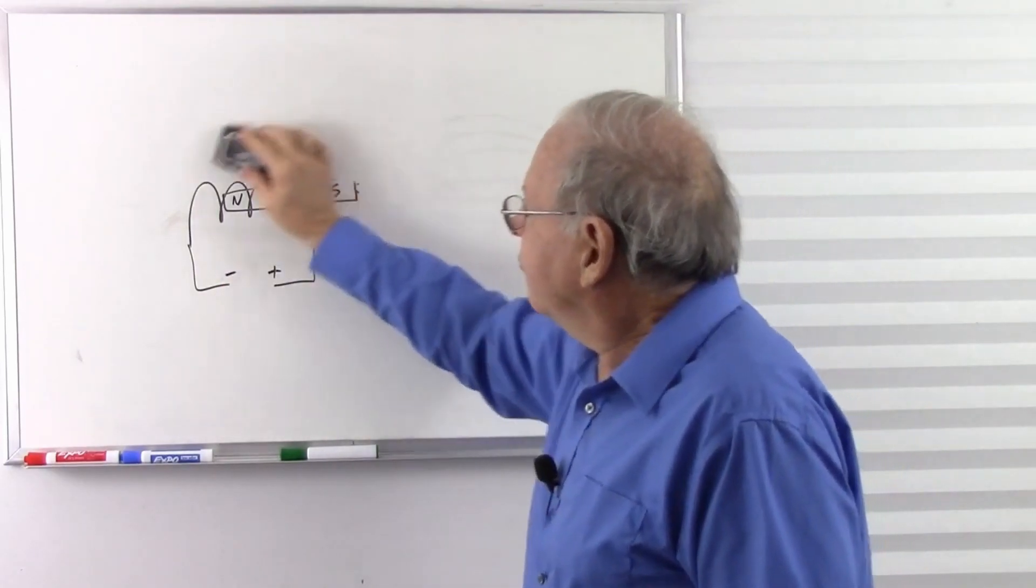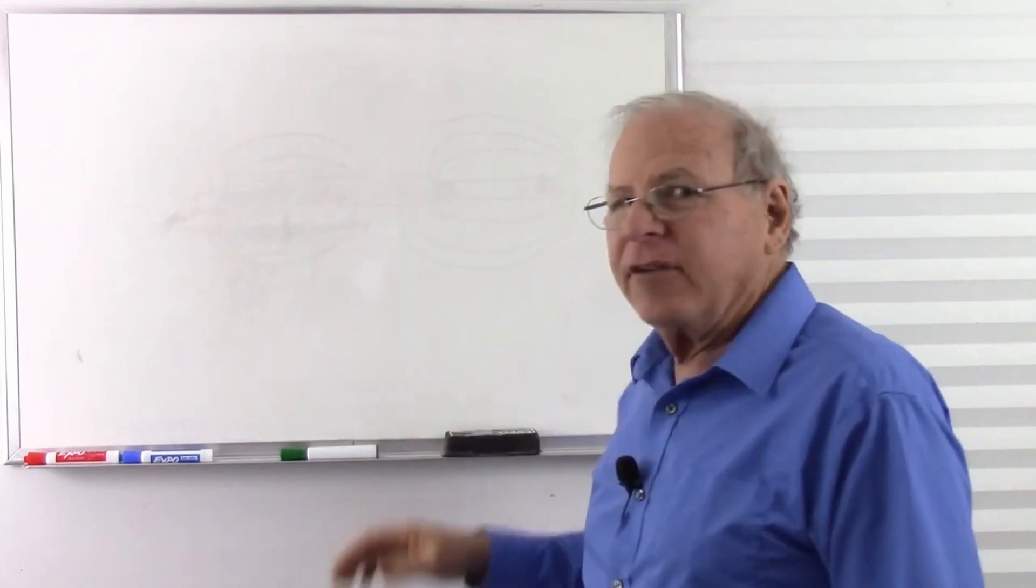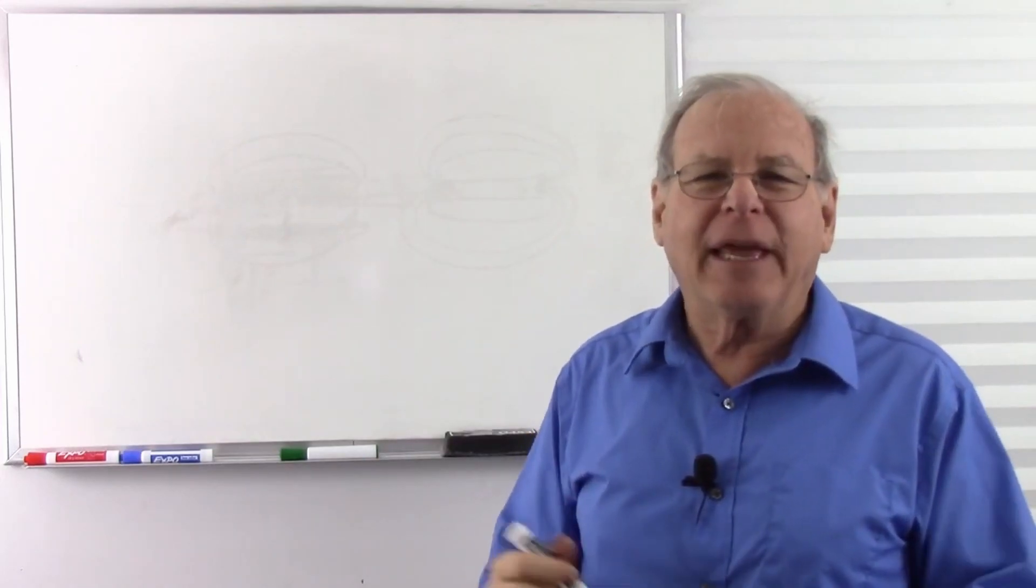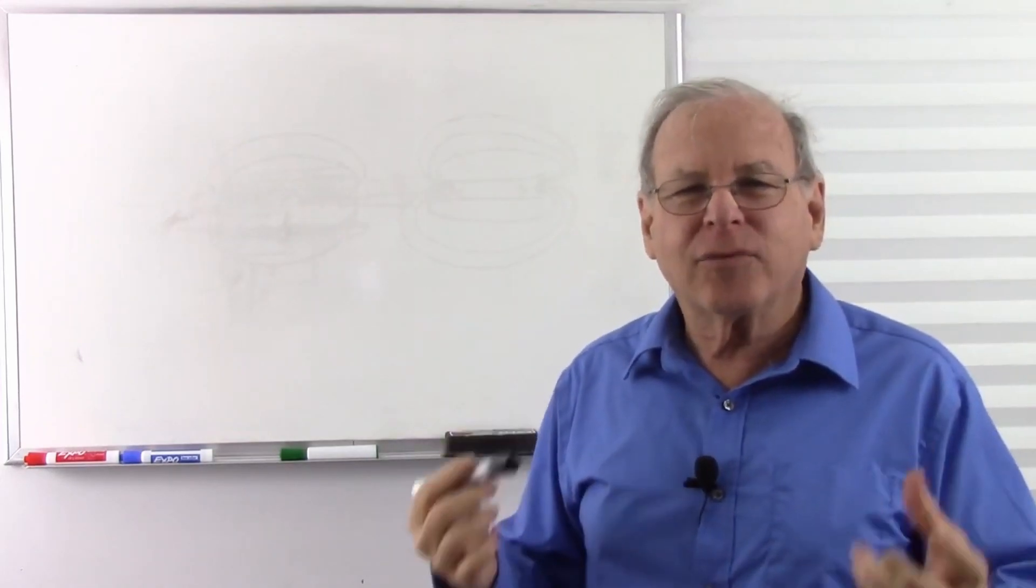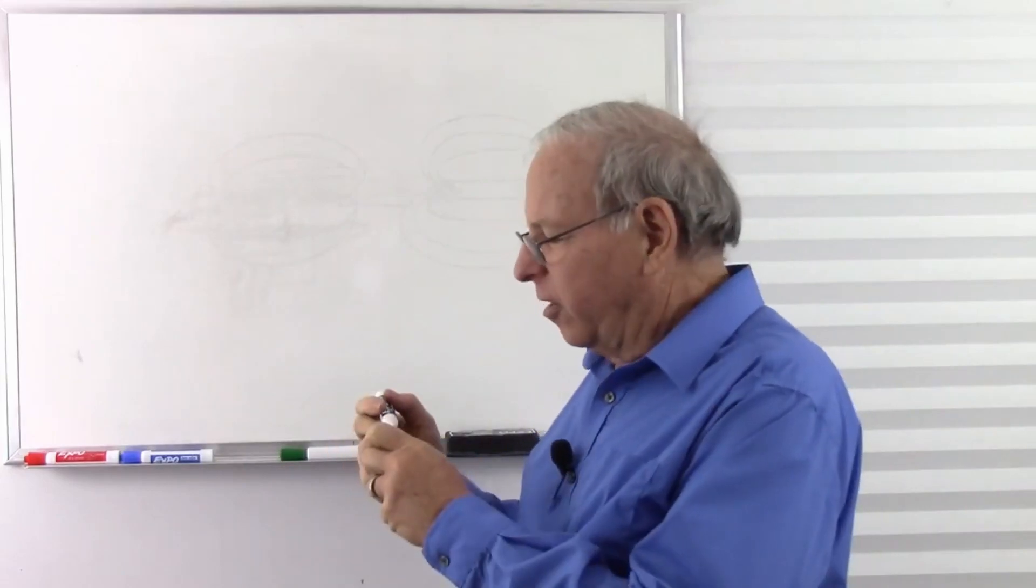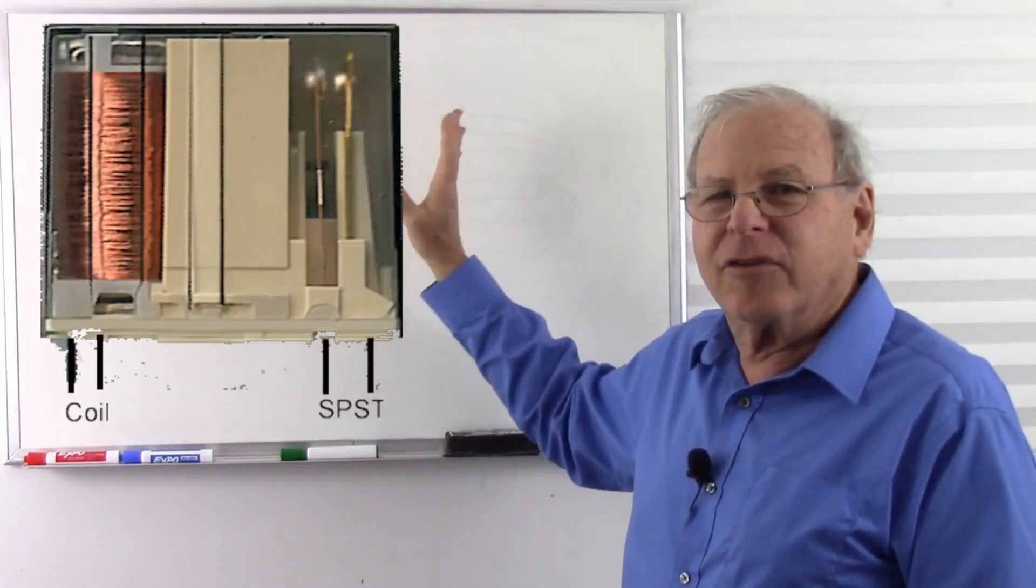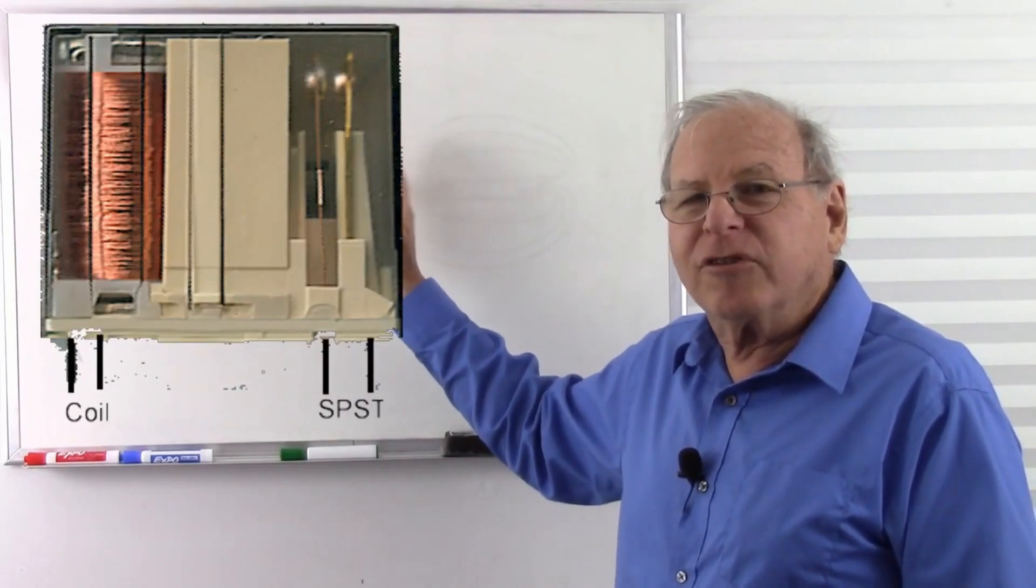Now, in electronics we also have a device called a relay, which is simply a solenoid actuated switch. So here's a picture of a relay here. You can see the coil of wire. And you can see the little reed switches in there.